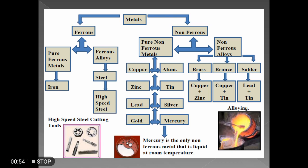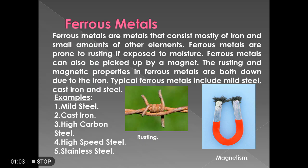Mercury is the only non-ferrous metal that is in liquid state at room temperature. Ferrous metals are metals that consist mostly of iron and a small amount of other elements. Ferrous metals are prone to rust if exposed to the atmosphere, and they can also be picked up by a magnet. The rusting and magnetic properties in ferrous metals are both due to the iron. Typically, ferrous metals include mild steel, cast iron, and steel.